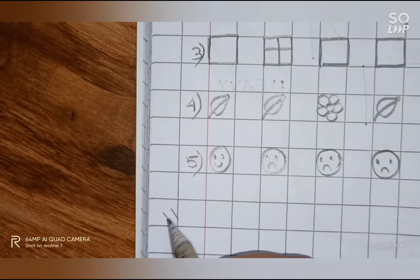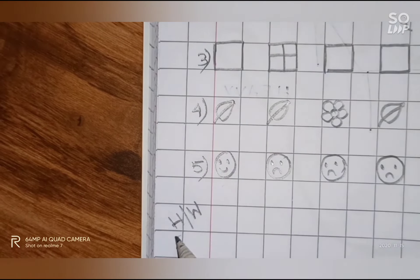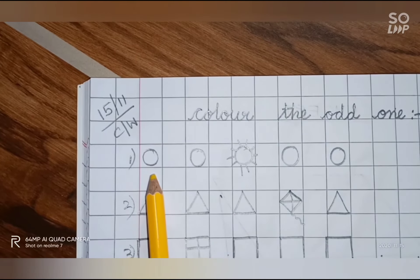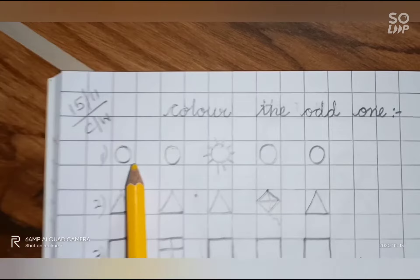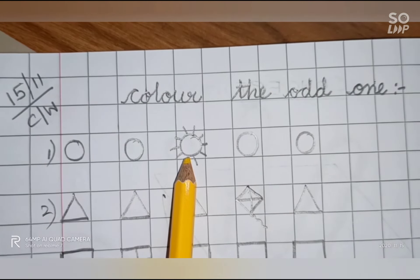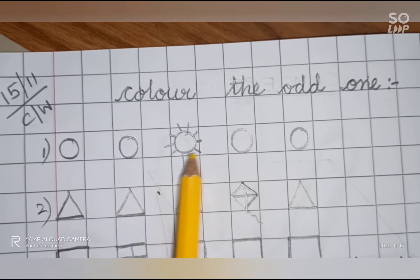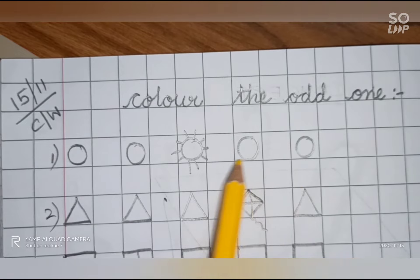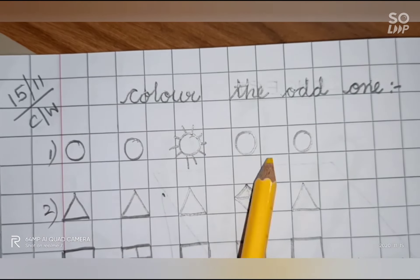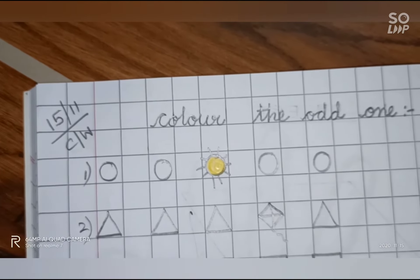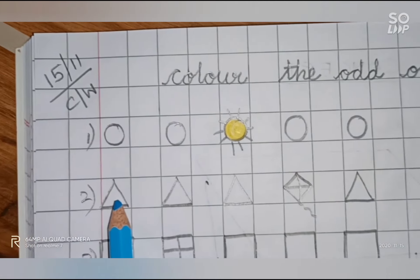We are going to write here HW, homework. We will take our pencil colors. This is a circle, this is also a circle, this is a sun. This is also a circle and this one the same. So which is odd one here? All are circles but the sun is the odd one. So we will color it like this.